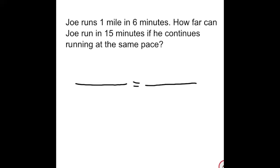The first problem was pretty simple — we knew it was two before we even had to solve it using the proportion. But when it gets a little bit more difficult, the proportion will come in handy. So: Joe runs one mile in six minutes. How far can Joe run in 15 minutes if he continues running at the same pace?